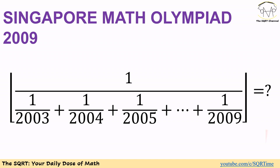Hello everyone, welcome to the SQRT channel. In this video we are going to talk about another problem from the Singapore Math Olympiad. In this problem we have a fraction where the denominator is 1 over 2003 plus 1 over 2004 plus 1 over 2005 up to 1 over 2009.